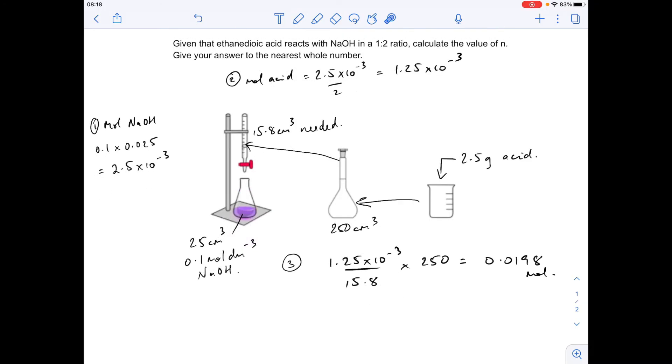So now we know how many moles of acid were in this 2.5 grams, we can work out the MR of the acid. So number 4 is going to be MR of acid is mass over moles. So 2.5 divided by 0.0198, and that comes out at 126.4.